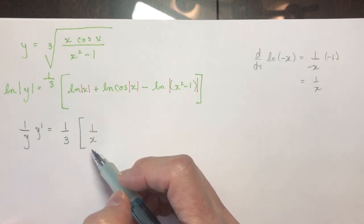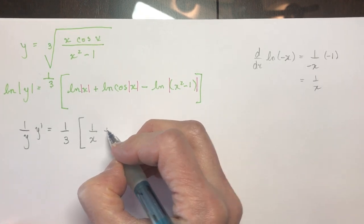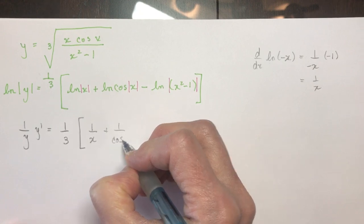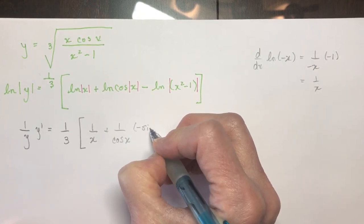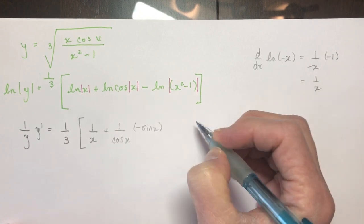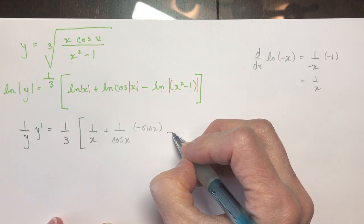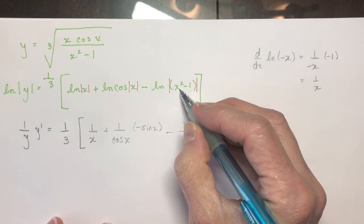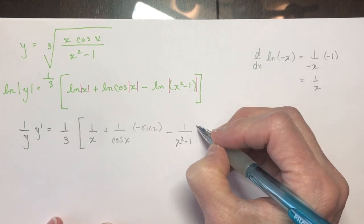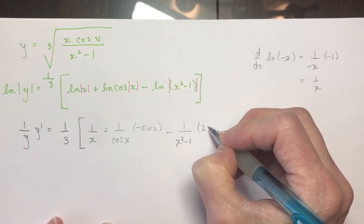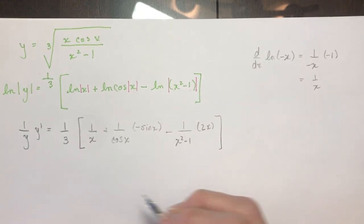Back to this one. So I did ln x is one over x. The ln of cos x is going to be one over cos x. And the derivative of cos x is negative sine x. You have to remember all these little rules, don't you? And the ln of this one is going to be minus one over x squared minus one times the derivative of x squared minus one, which is 2x.